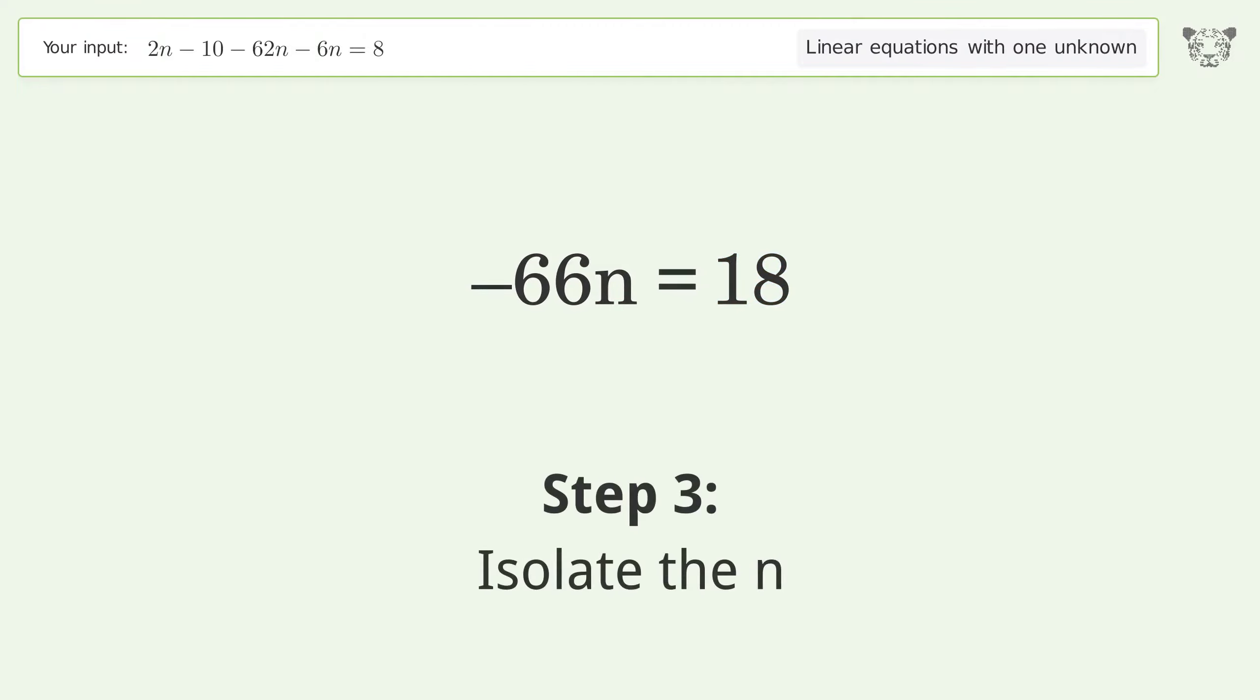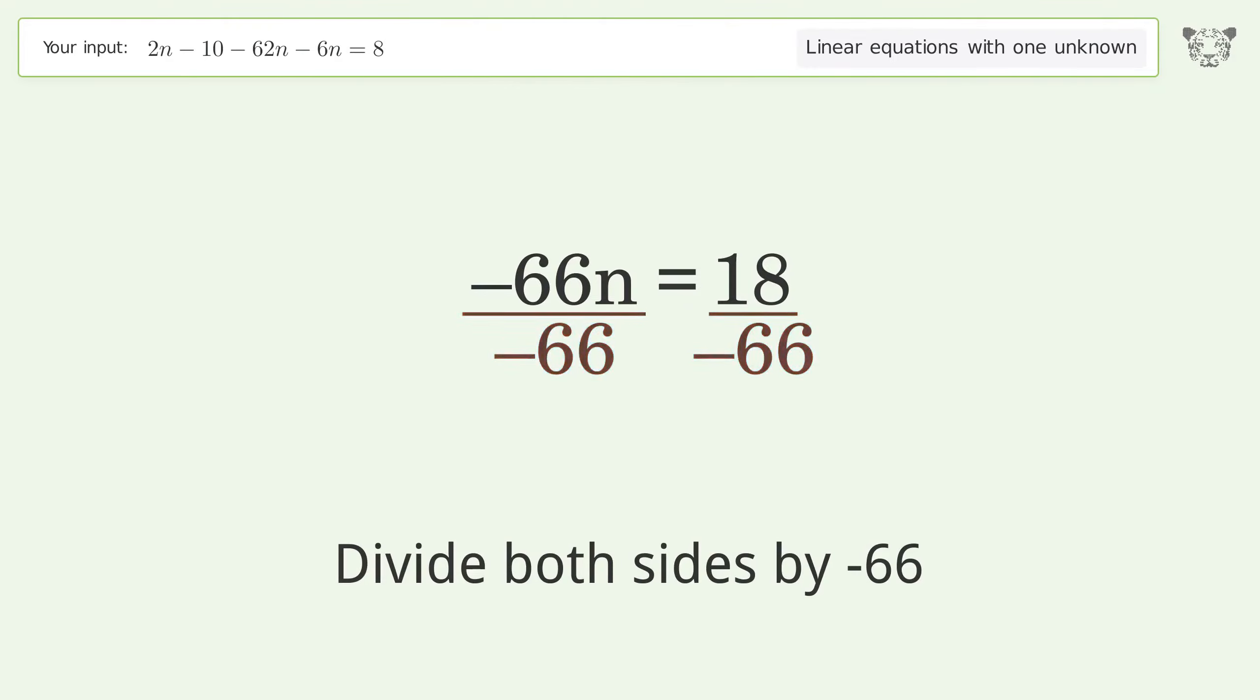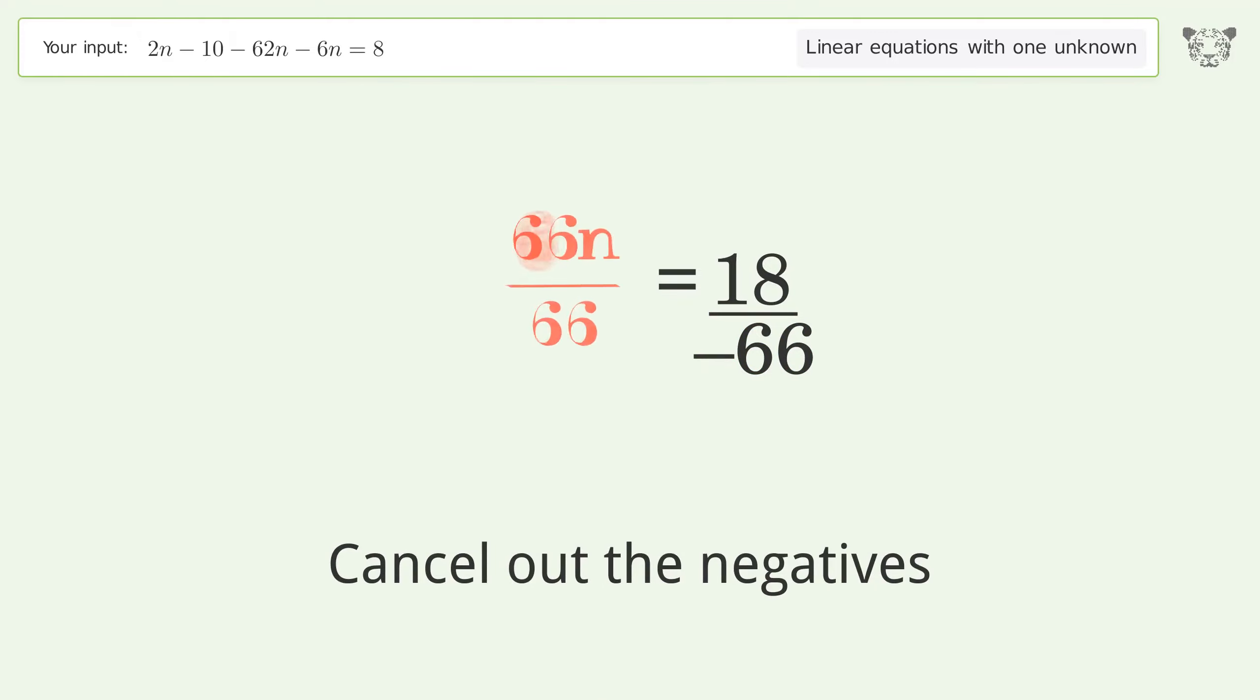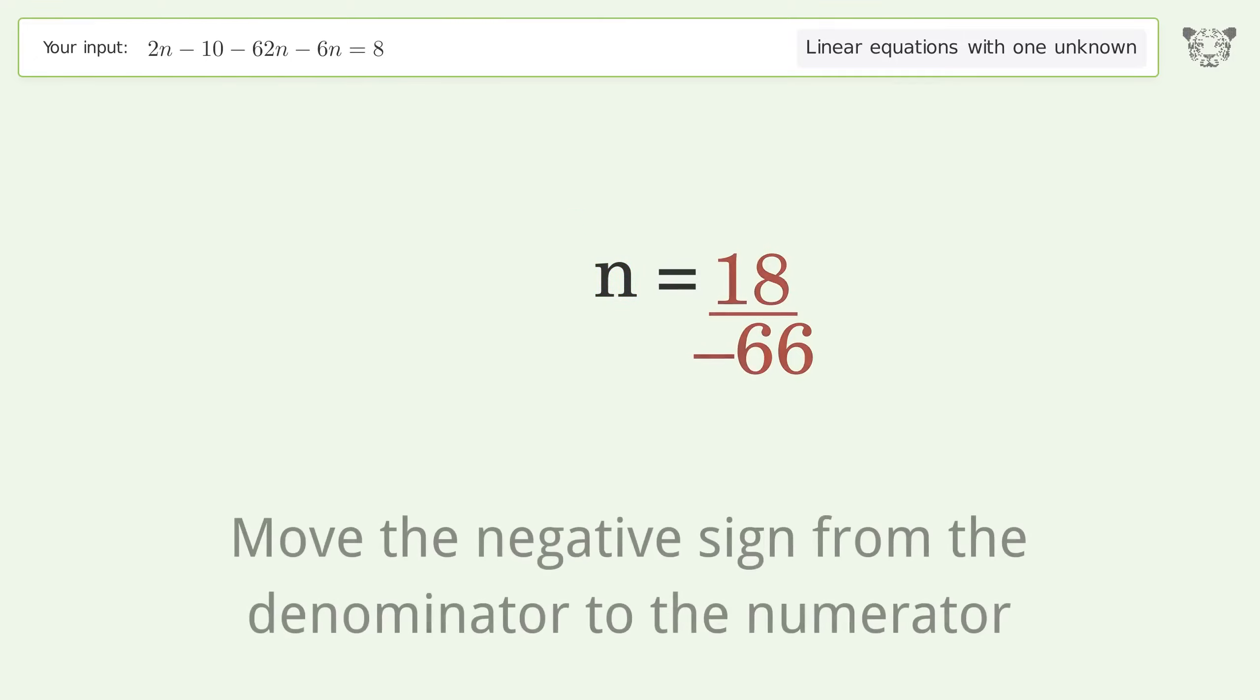Isolate the n. Divide both sides by negative 66. Cancel out the negatives. Simplify the fraction. Move the negative sign from the denominator to the numerator.